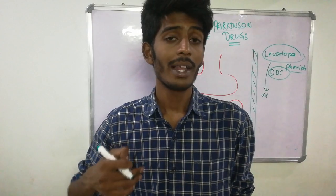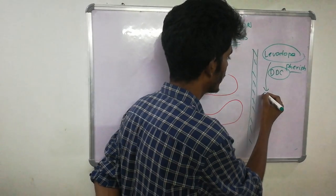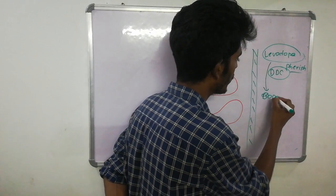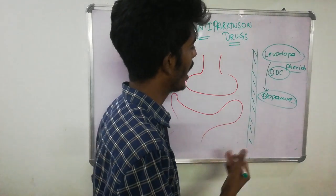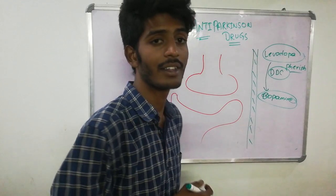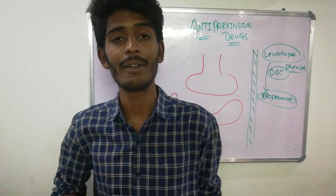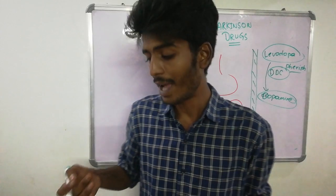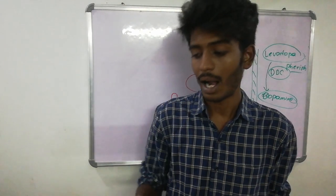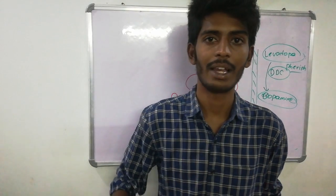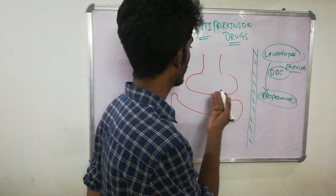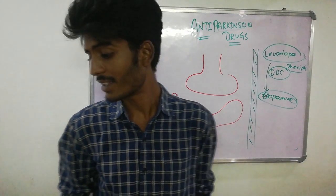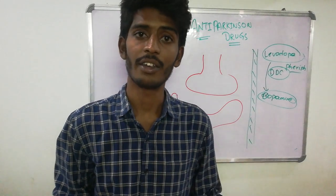When levodopa is broken down in the periphery, it converts into dopamine. When dopamine is elevated in the periphery, it acts on the heart, increases heart rate, and causes vasodilation in the kidneys and mesentery. All of those effects are problematic, and still our purpose of increasing dopamine in the central nervous system was not achieved.